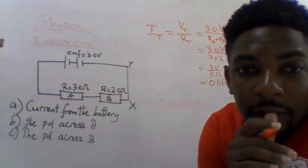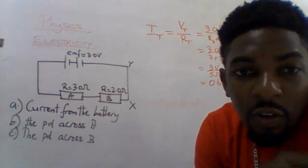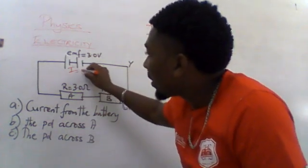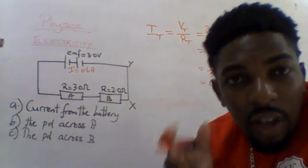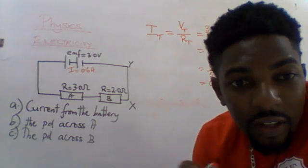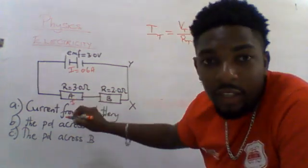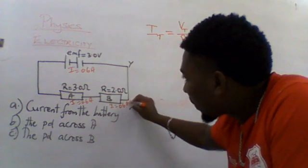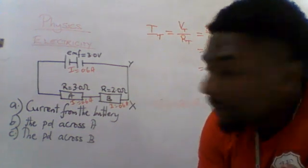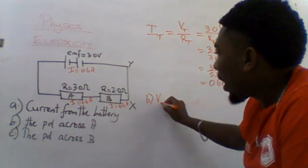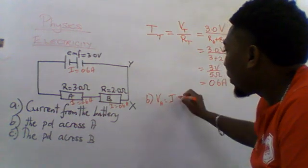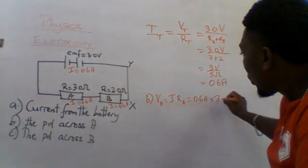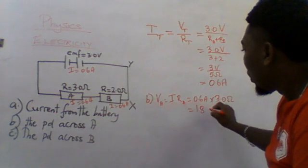The second part of the question asks: what is the potential difference across A — meaning the voltage across A? We know the current is 0.6 amps, and in a series circuit the current is constant. So the current through A is also 0.6 amps. The voltage at A equals the current multiplied by the resistance at A: 0.6 amps times 3 ohms equals 1.8 volts.